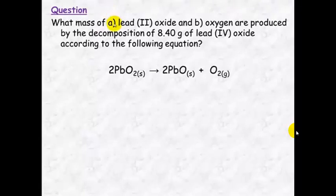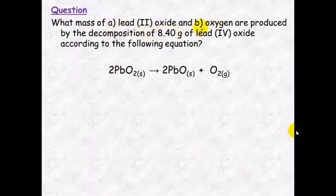Here's a question for you to have a go at. What mass of (a) lead oxide and (b) oxygen are produced by the decomposition of 8.4 grams of lead oxide according to the following equation? I've given you the equation — pause this, have a go, I'll pop the answers up and then I'll run through the solutions.